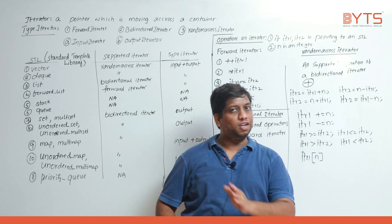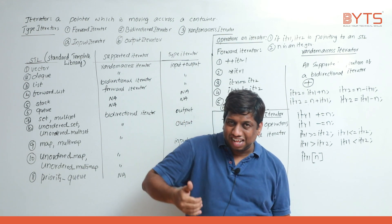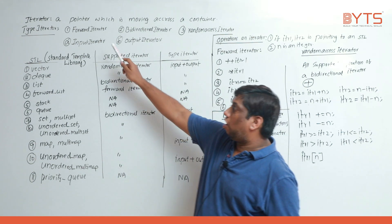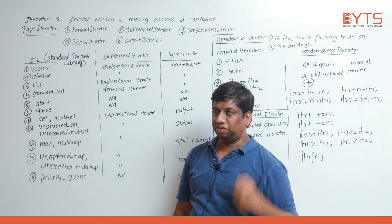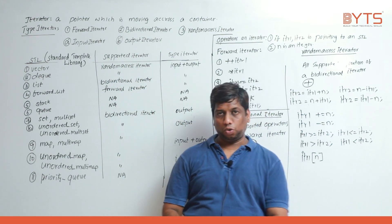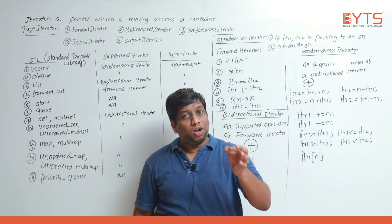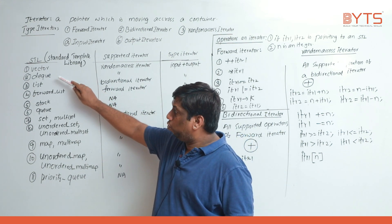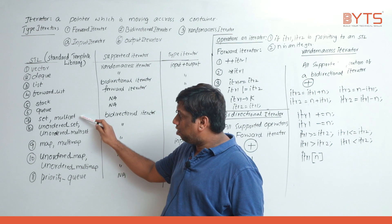There are five types of iterators. The first classification includes: forward iterator, bi-directional iterator, and random access iterator. The second classification includes: input iterator and output iterator. Totally we have five types of iterators.